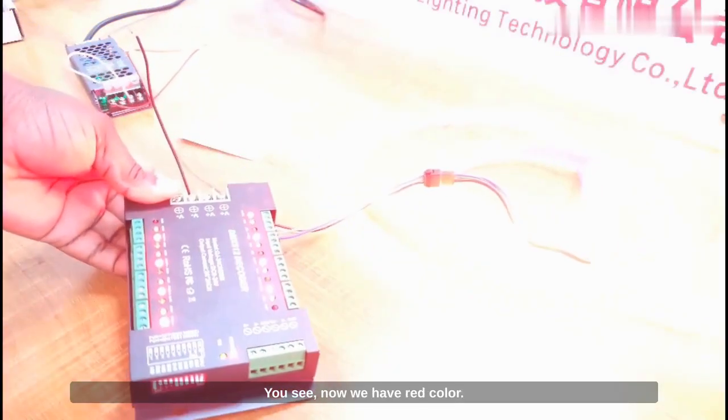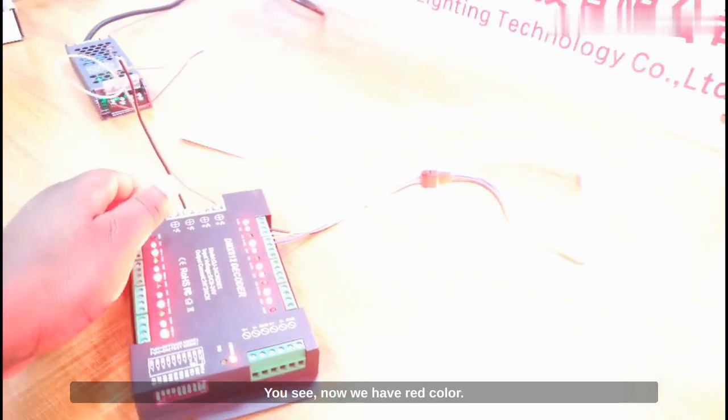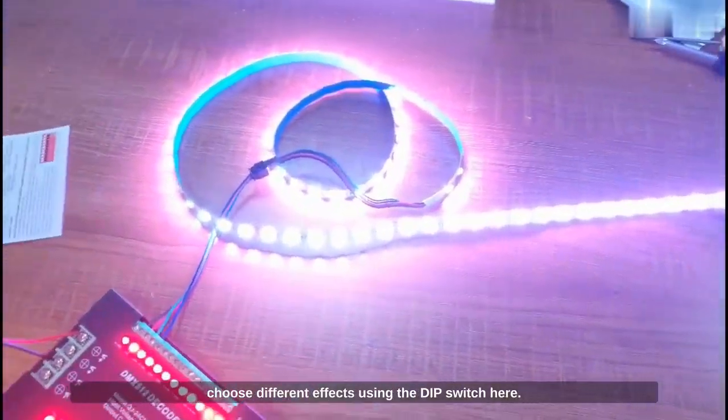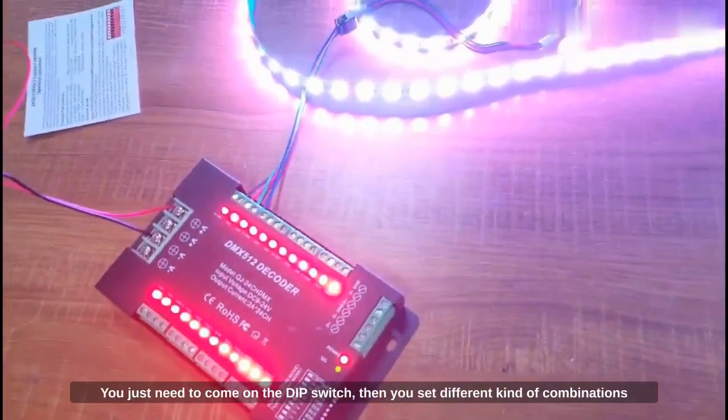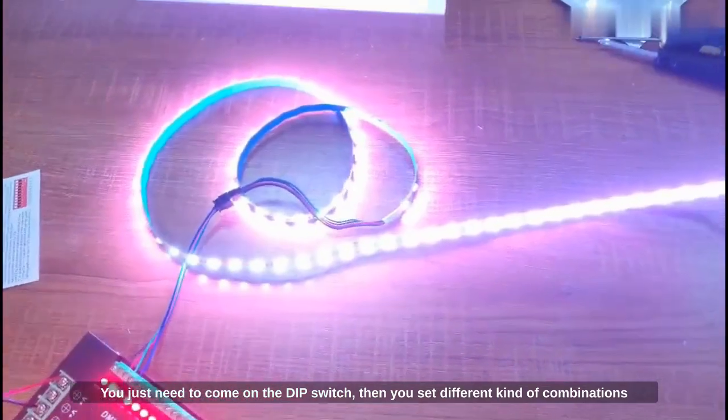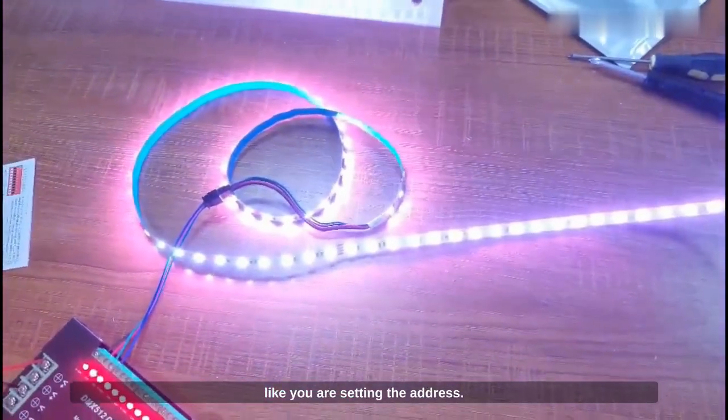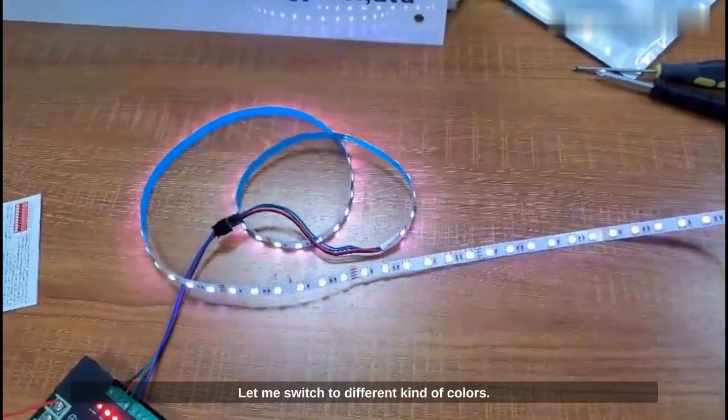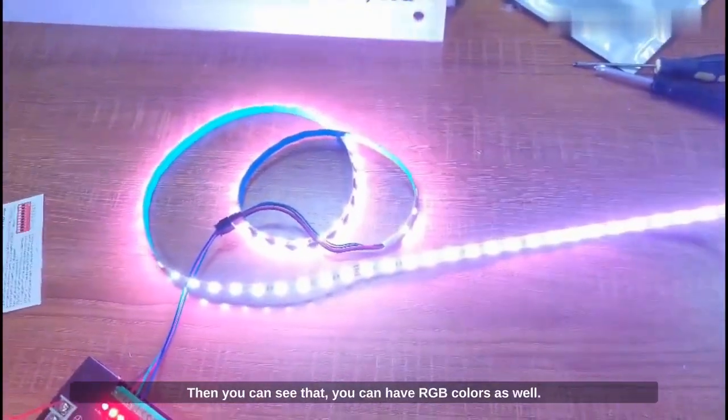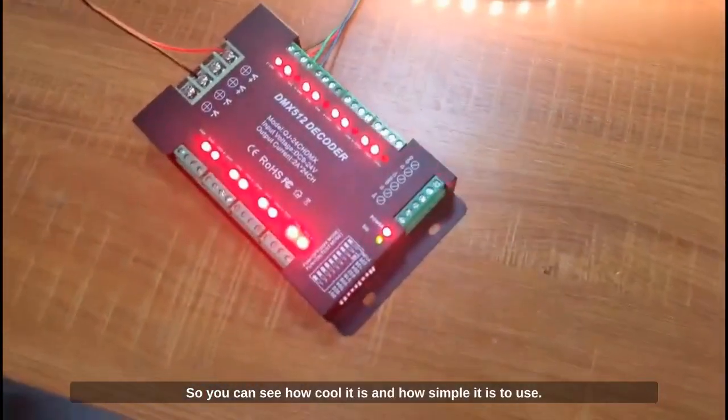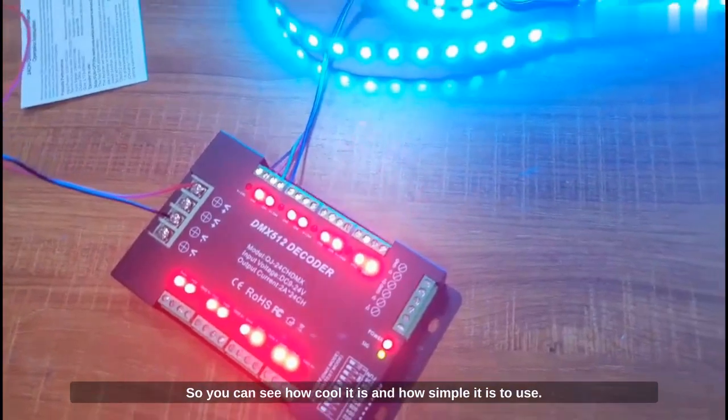You can see my LED strip is on. Now let's work with the DIP switch to change to different colors and different effects. You see now we have red color, so you can change different colors or you can choose different effects using the DIP switch. You just need to come on the DIP switch and you have different kinds of combinations. It's like you're setting the address to have different kinds of colors. You can have RGB colors as well. You can see how cool it is and how simple it is.